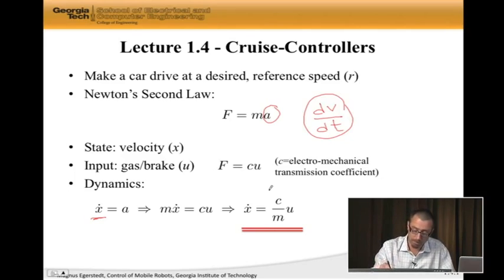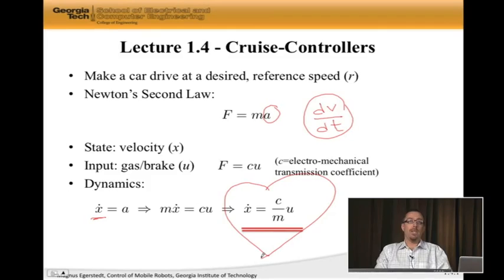So that tells me directly that x dot is c over m times u. So this little sweetheart equation here is an equation that describes how my input maps onto the state of the system. It's a differential equation, but it's an equation that tells us something about how my choice of input affects the system.